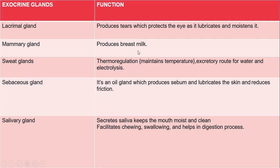The mammary gland produces breast milk — this is its main function. Both males and females have mammary glands, but in males they remain in a rudimentary form. When females reach puberty, the mammary gland develops fully. In males it stays rudimentary.